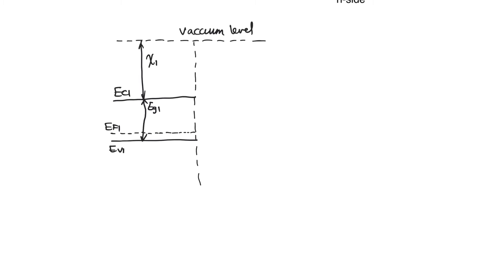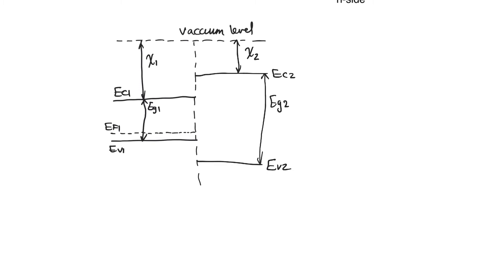Similarly, on the other side of the interface, we find EC2, the conduction band edge for material 2, using chi-2. Using the band gap for material 2, we find EV2, the valence band edge. Knowing the doping of material 2, we can find EF2. The two materials have different band gaps, different affinities, and different everything. How they align depends on those material properties — perhaps material 2 has a larger band gap but its conduction band edge lies below that of material 1.